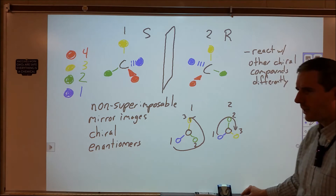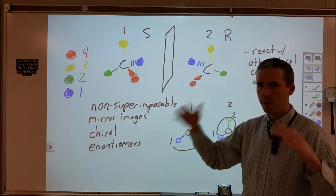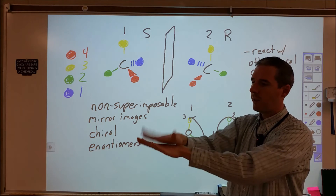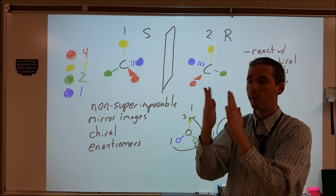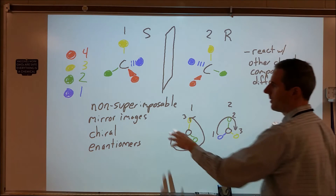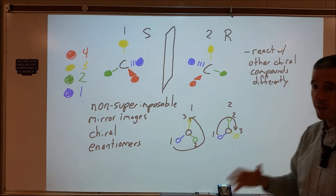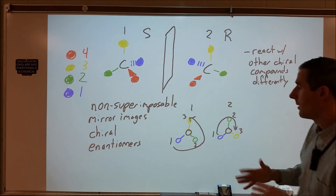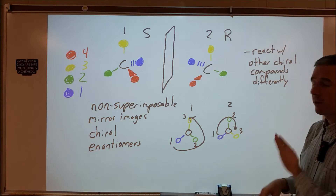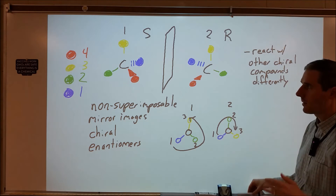A good example of chirality is your hands — they are non-superimposable mirror images. Your hands are chiral: enantiomer one and enantiomer two. You can't put your right hand on your left hand or your left hand on your right hand, but they are mirror images of each other, ignoring freckles and nails and little defects. So if you get other chiral things, like gloves that are obviously sided with a back and a front, you're not going to put your left hand in your right glove — because it's not going to interact with something else that's chiral.